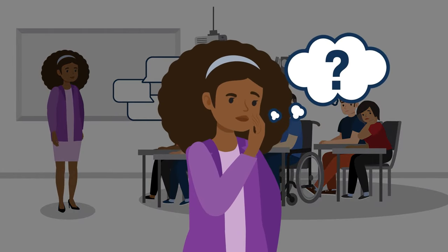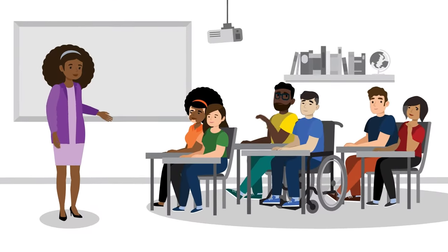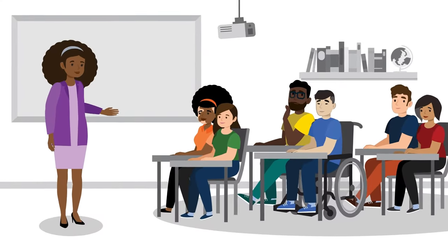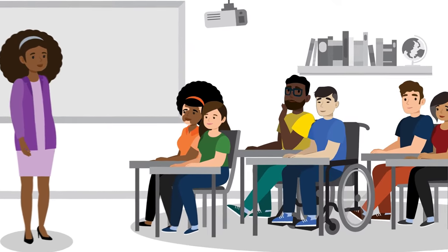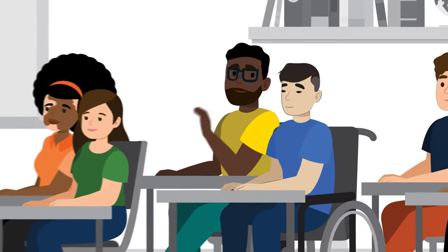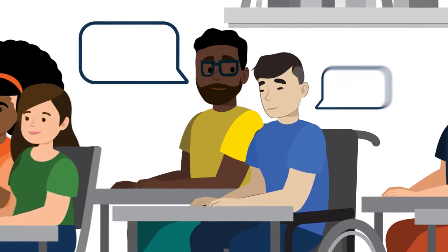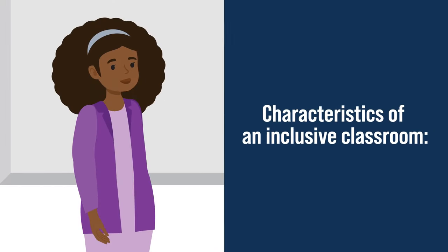Let's start by considering what an inclusive classroom looks like. An inclusive classroom is one in which all students feel intellectually supported and are invited to develop a sense of belonging regardless of identity, learning preferences, or background. To achieve this, we need to develop a number of key characteristics.